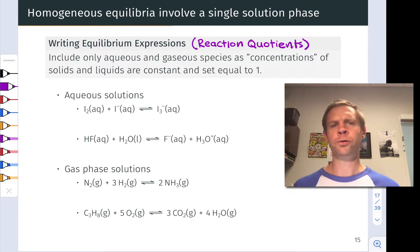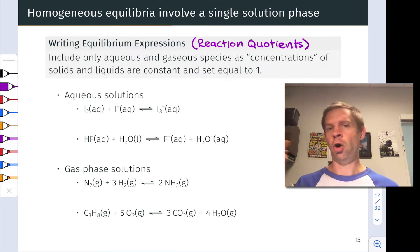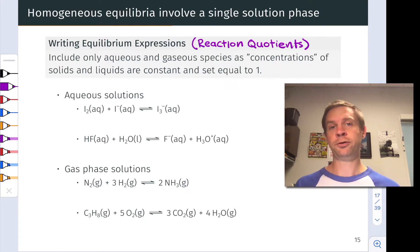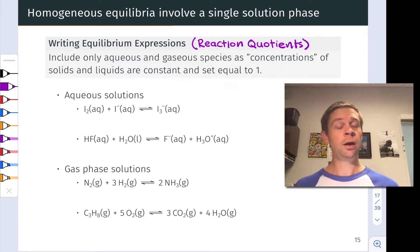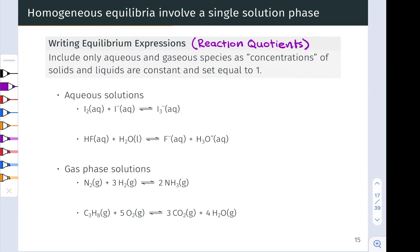Let's start with homogeneous equilibria first, because these are relatively simple to deal with since we're dealing with chemical species all in a single phase. To write equilibrium expressions or reaction quotients for these reactions, we just apply the ideas that we've seen previously: products over reactants. There is one important principle we need to introduce here.